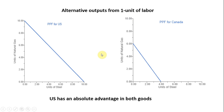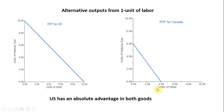In our third example, we have two countries' production possibilities frontiers for the U.S. and Canada, looking at alternative outputs from one unit of labor. A person in the United States can either produce 10 units of natural gas or 10 units of steel, while a person in Canada can either produce 6 units of natural gas or 4 units of steel. The U.S. has an absolute advantage in both goods. One person in the U.S. can produce more natural gas than a person in Canada — 10 is bigger than 6. The U.S. also has an absolute advantage in steel: one person in the United States can produce more steel than a person in Canada — 10 is greater than 4.